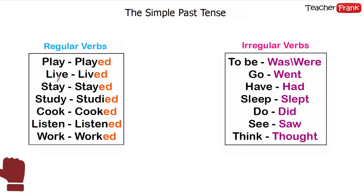First of all, we have the regular verbs and the irregular verbs. The regular verbs are very simple — you only add "-ed". So here we have "play" → "played". This is in the present; this is in the simple past form.